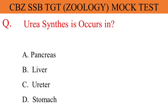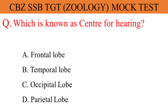Urea synthesis occurs in? The given options are A. Pancreas, B. Liver, C. Ureter, D. Stomach. And the correct answer is option B. Liver.